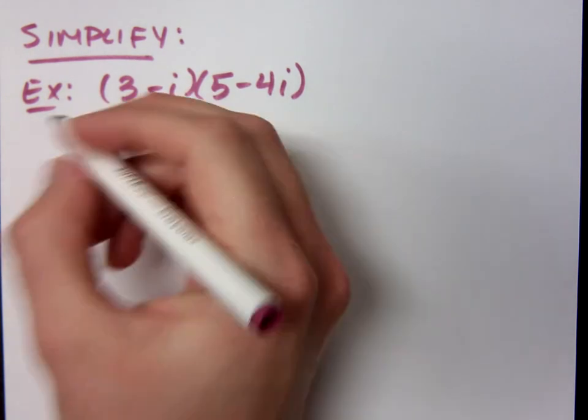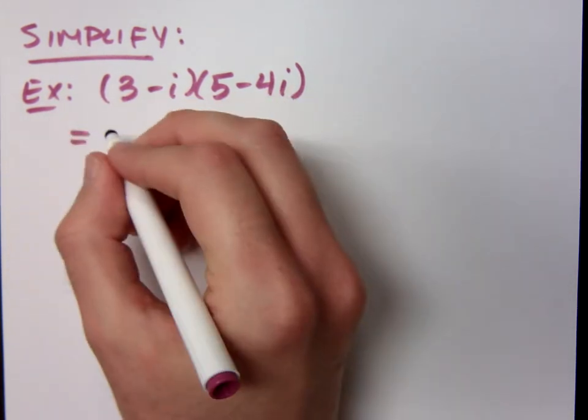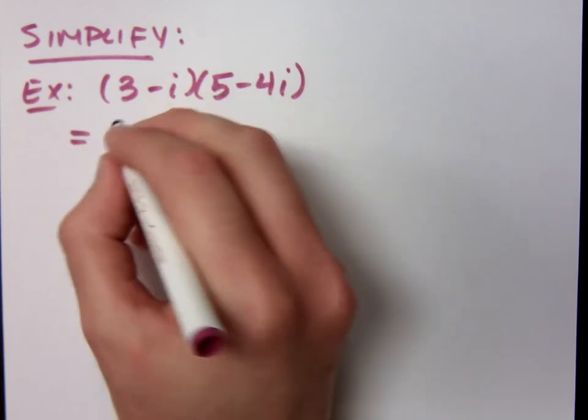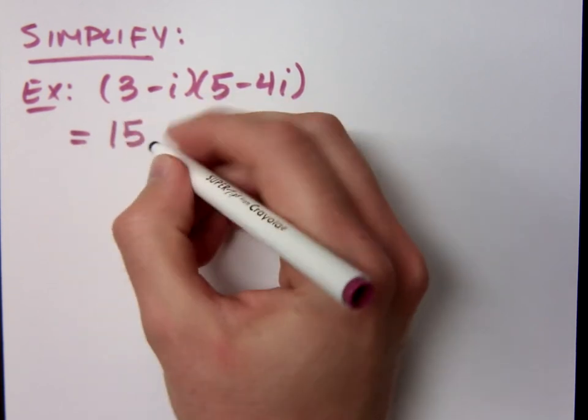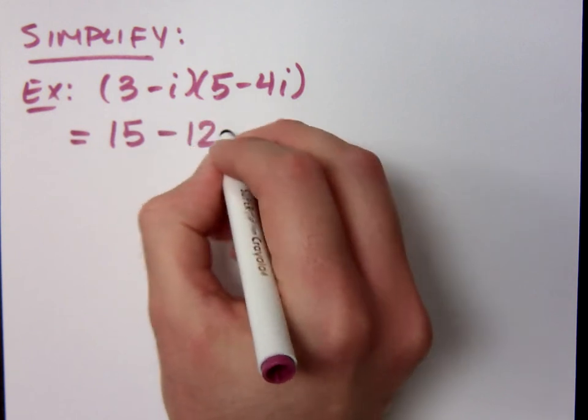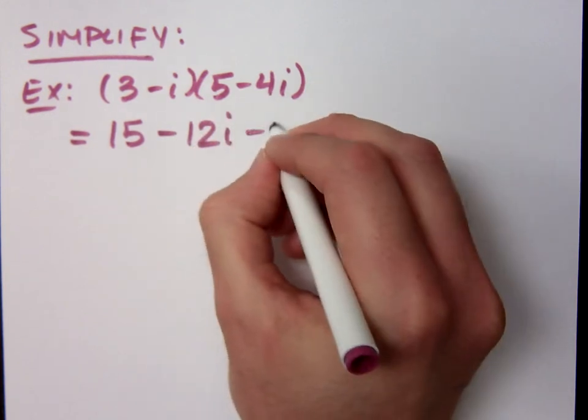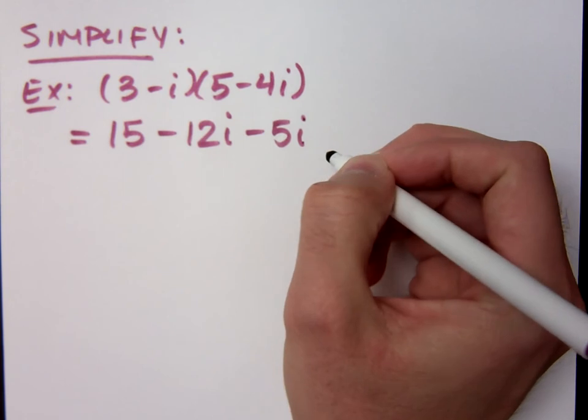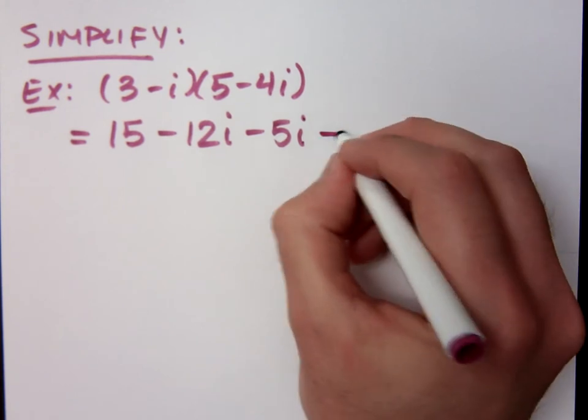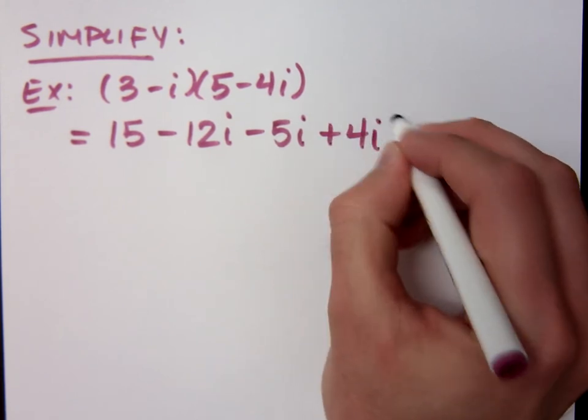You're multiplying two binomials, so of course we're going to FOIL. When I FOIL, what's the product of the first terms? 15. How about outside? Minus 12i. Inside, minus 5i, and the product of the last terms, plus 4i squared.